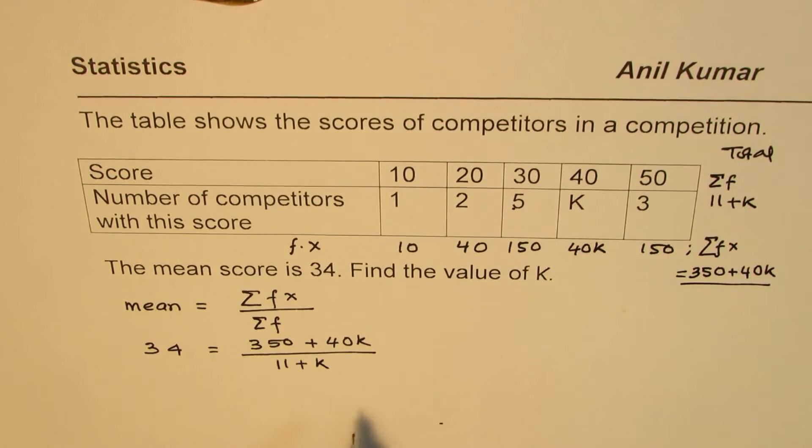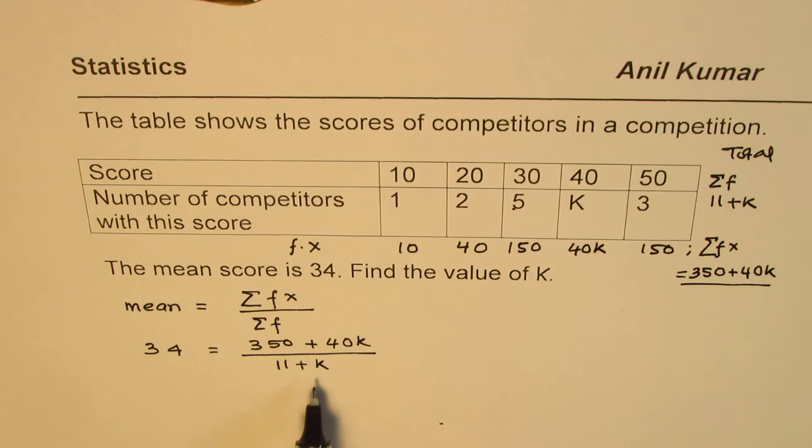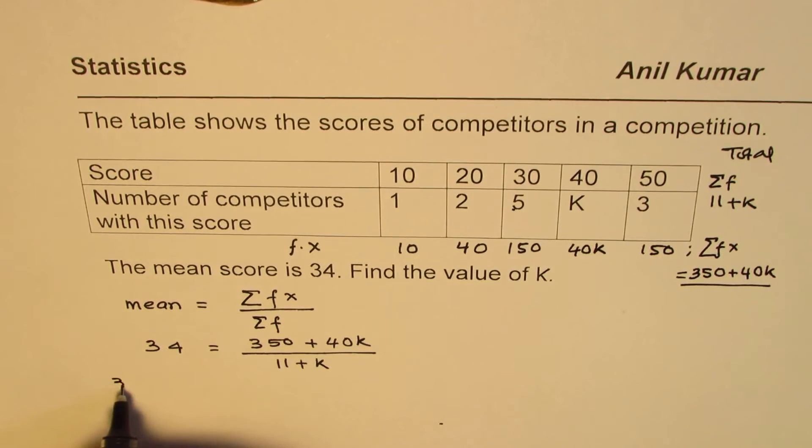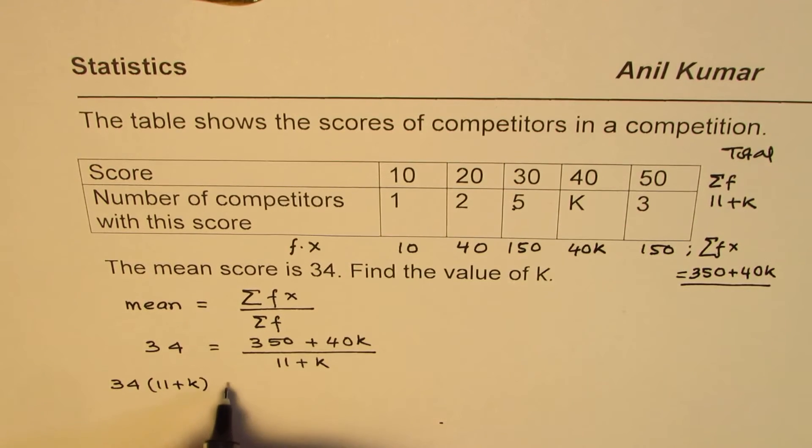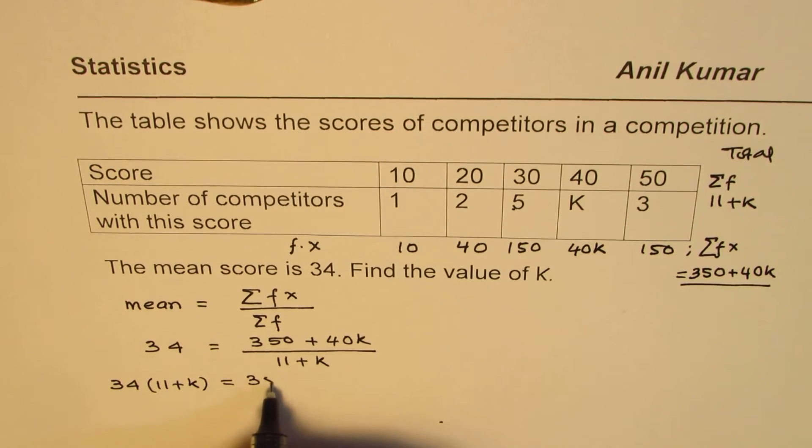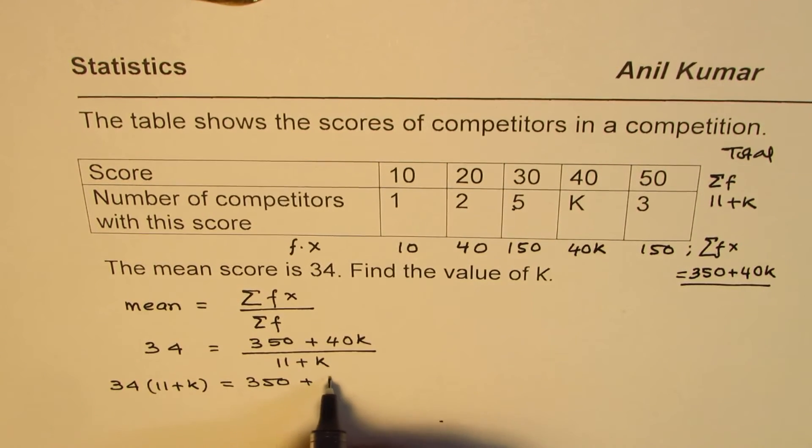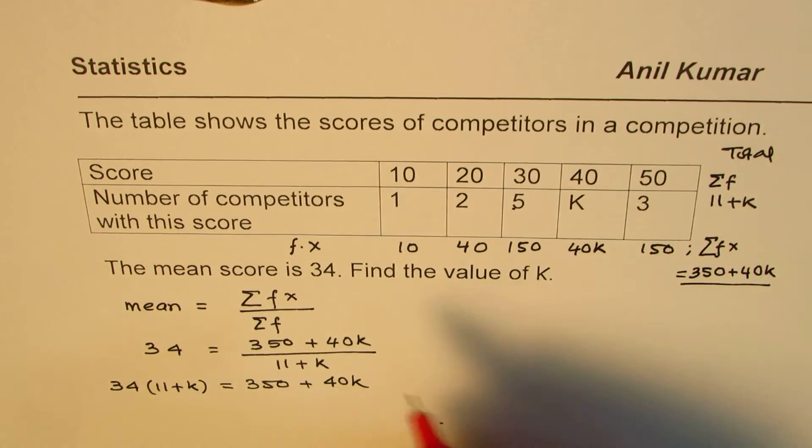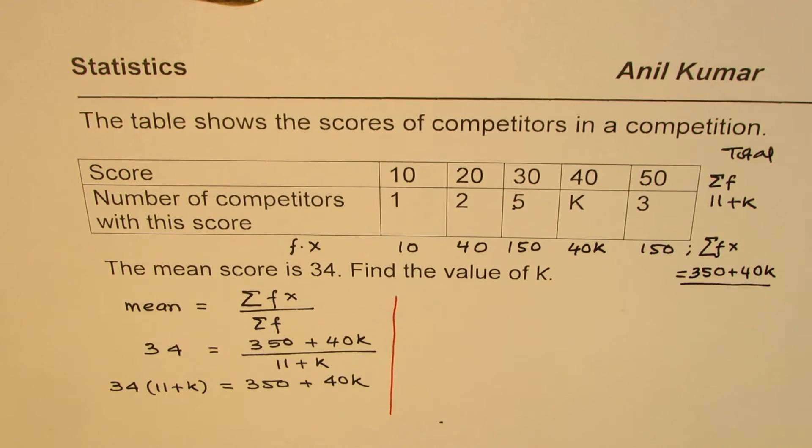So we get kind of an equation where there is only one unknown K and it could be calculated. So let us cross multiply. So we get 34 times 11 plus K equals to 350 plus 40K.